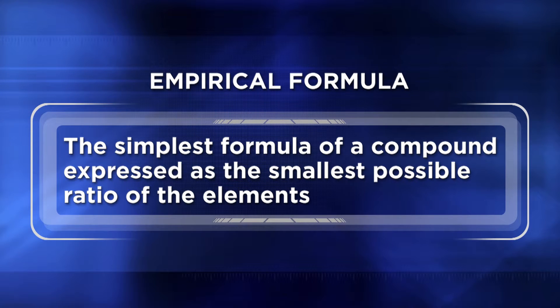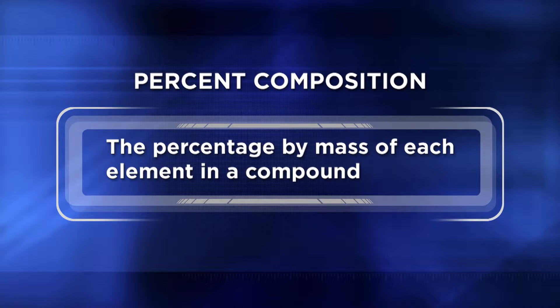The simplest formula of a compound, expressed as the smallest ratio of the elements in the compound, is known as an empirical formula. Empirical formulas are useful to chemists because they allow us to look at the composition of the compound, and we can describe that compound's elemental makeup in what is known as percent composition — the percentage by mass of each element in a compound, also called percent by mass or mass percent.